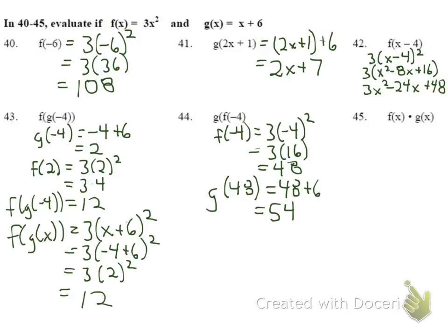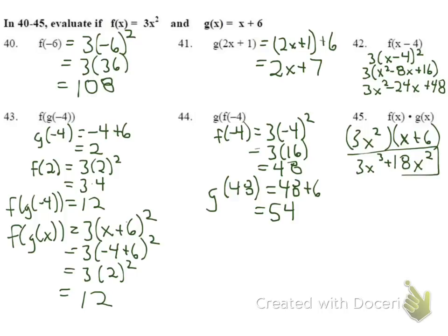For number 45, we multiply f(x) times g(x): 3x² times (x + 6). Distributing gives 3x³ plus 18x². Since it's multiplication we don't need to factor further — that's our final answer using the distributive property.